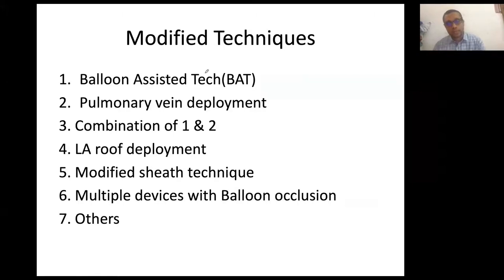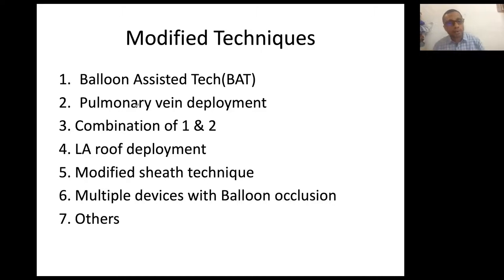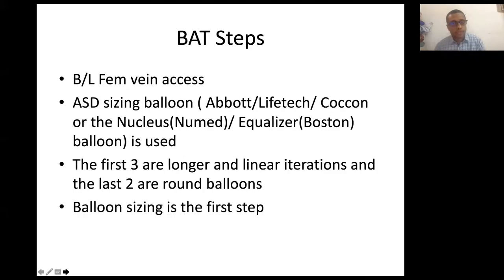Now coming to intervention techniques for complex ASDs. We have different techniques: first, the balloon-assisted technique (BAT), which is very popular in our lab; second, pulmonary vein deployment; third, a combination of BAT and pulmonary vein which we are preparing to publish and which improves success rate for deficient infero-posterior rims. We also have the LA roof deployment method, modified sheath technique, dilator-resistant techniques, and multiple devices with balloon occlusion. These six techniques are the ones we use in our cath lab.